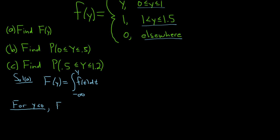For y less than zero, we want F of y. That's the improper integral from negative infinity to y of f of t dt. Because y is less than zero, it falls in the 'elsewhere' category, so we integrate zero dt. Integrating zero gives a constant, and with limits of integration you get a constant minus a constant, which equals zero. So for y less than zero, F(y) = 0.